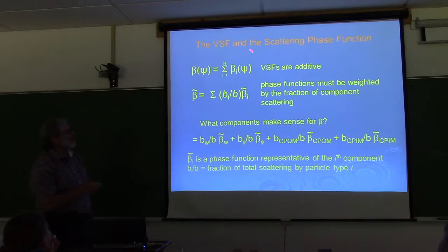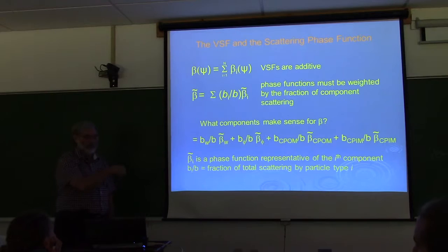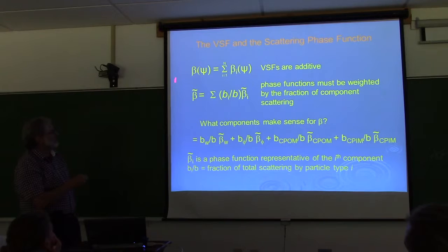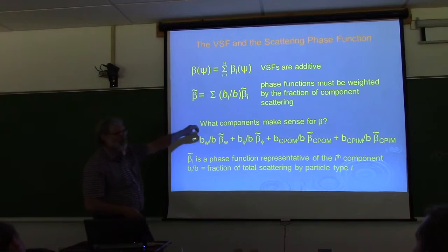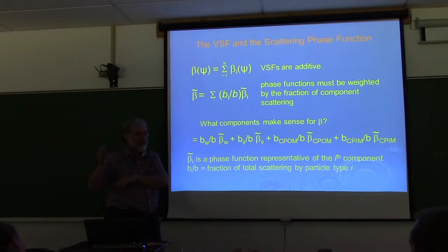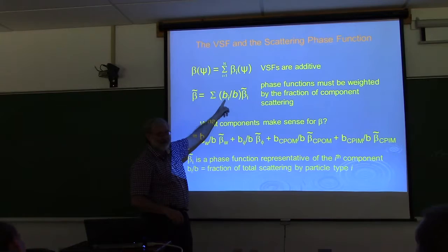Usually we'll have one model for the scattering coefficient and separate models for phase functions of the different components, then add them together. Since the VSF equals b times the phase function, the total phase function is the sum of individual component phase functions, each weighted by that component's scattering coefficient divided by the total scattering coefficient. When you run Hydrolight and pick a phase function for phytoplankton and another for mineral particles, it weights them by their respective scattering contributions and builds the total phase function.